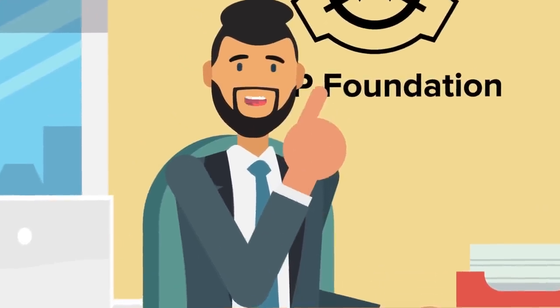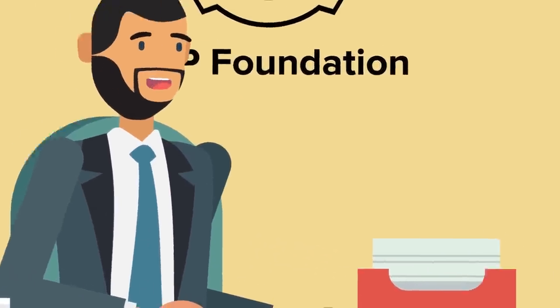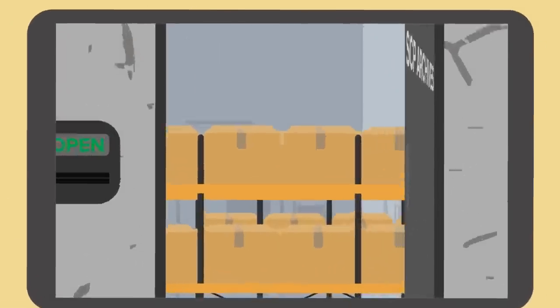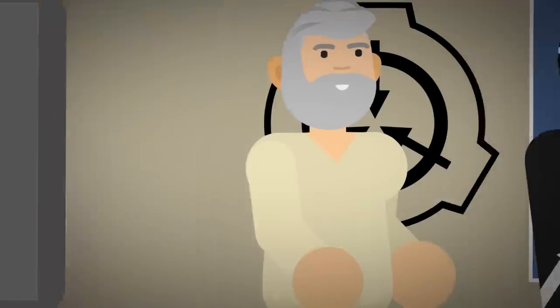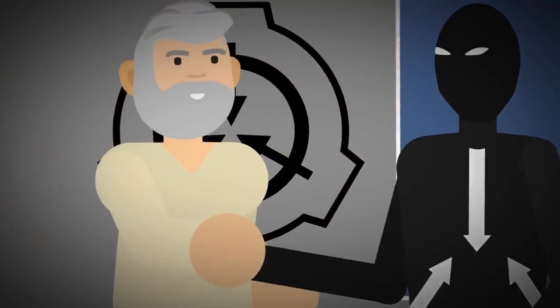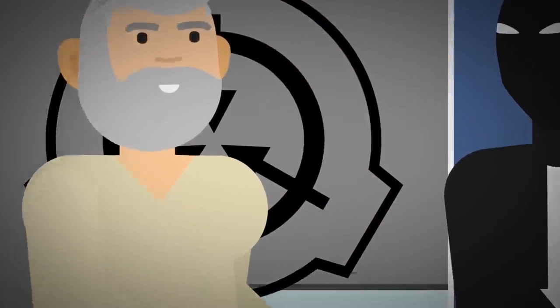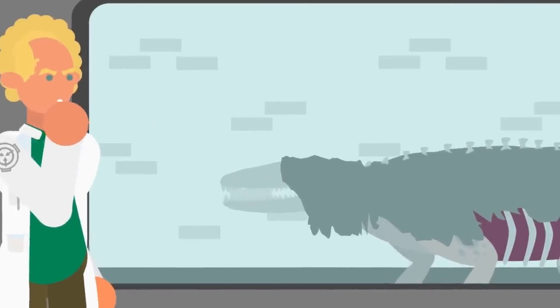At the time of this video's writing, the SCP Foundation currently contains well over 6,000 items. This organization really gets around, from making deals with deities to containing horrors capable of ending the world in a heartbeat.